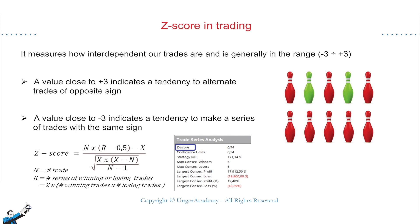A value close to positive 3 indicates a tendency to alternate trades of an opposite sign — so a loss is more likely to be followed by a winning trade. On the other hand, a value close to negative 3 indicates a tendency to make a series of trades with the same sign; in this case, we see losing trades following one after the other. For the more curious, here is the Z-Score formula. This shouldn't scare us, because MultiCharts comes to our rescue by showing us the value of this metric directly in the trade analysis tabs.